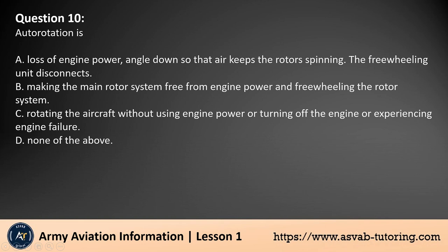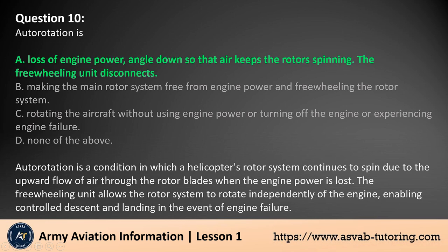Question 10. Autorotation is: A. Loss of engine power — angle down so that air keeps the rotor spinning, and the freewheeling unit disconnects. B. Making the main rotor system free from engine power and freewheeling the rotor system. C. Rotating the aircraft without using engine power or turning off the engine or experiencing engine failure. D. None of the above. The answer is A.